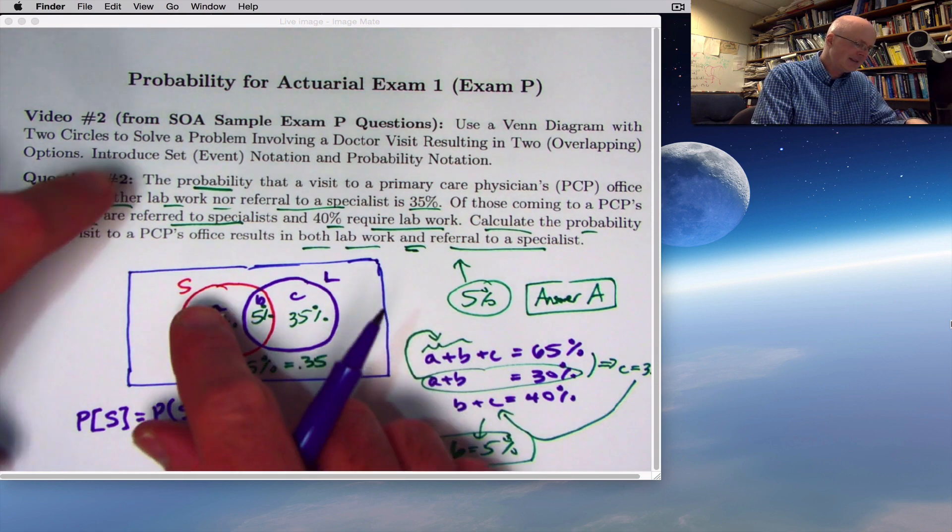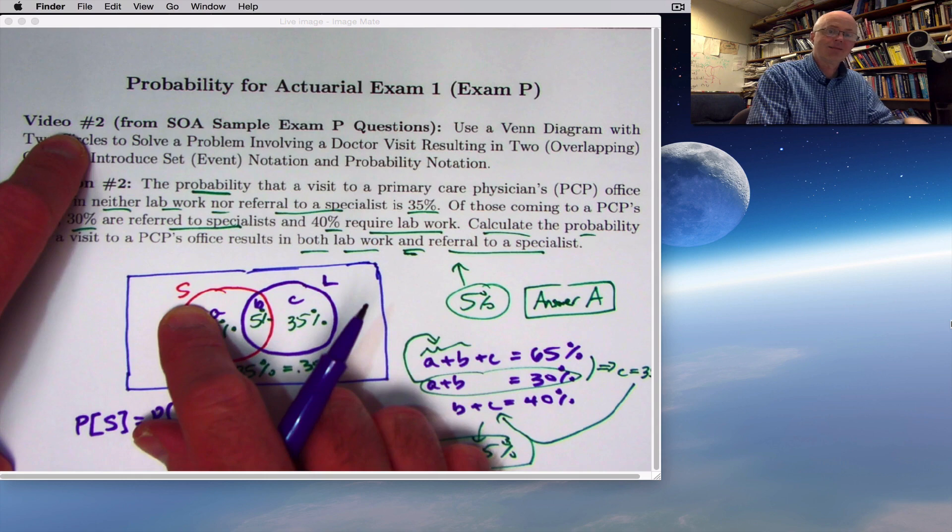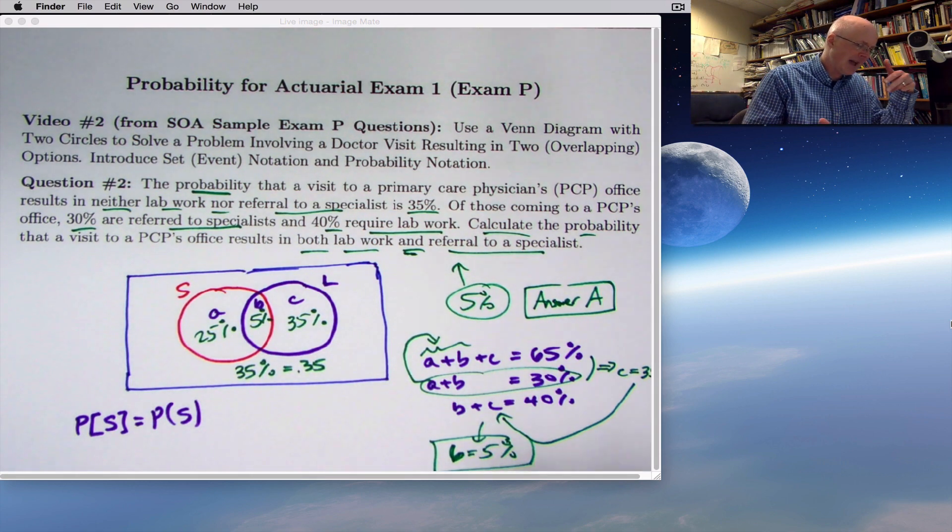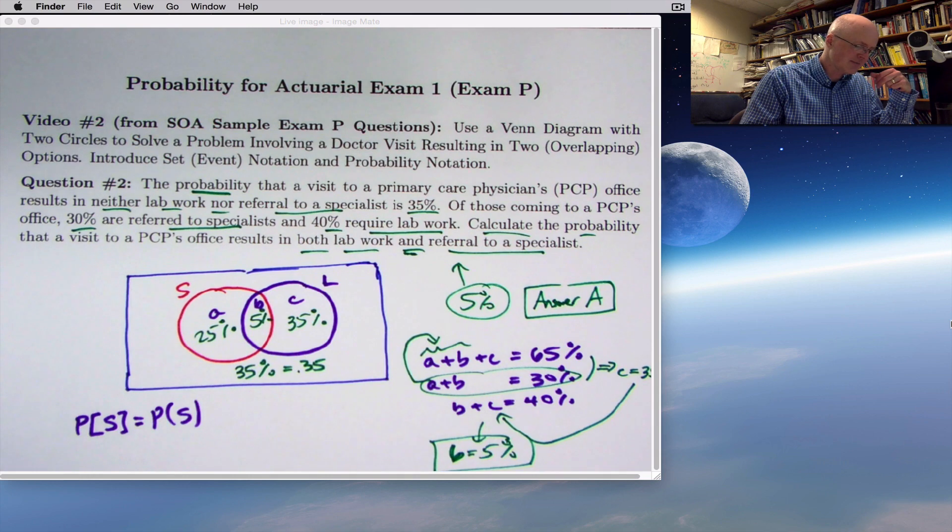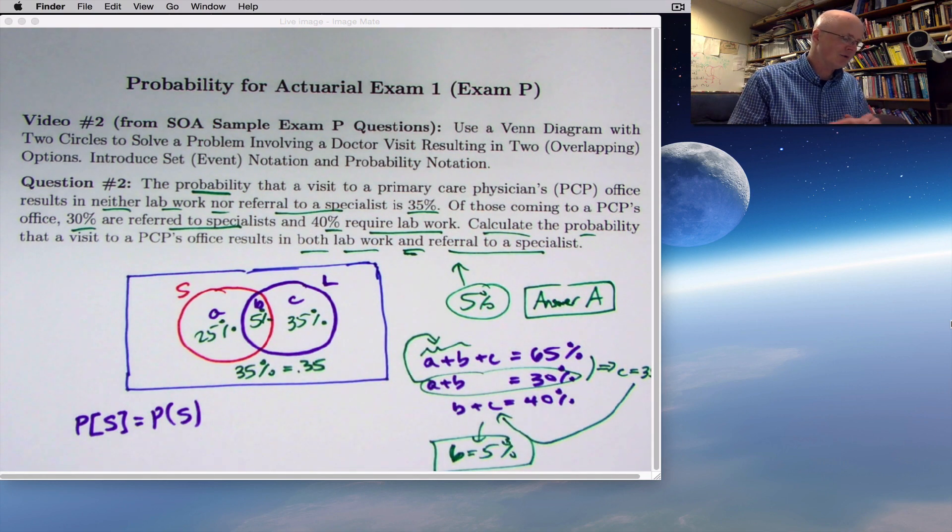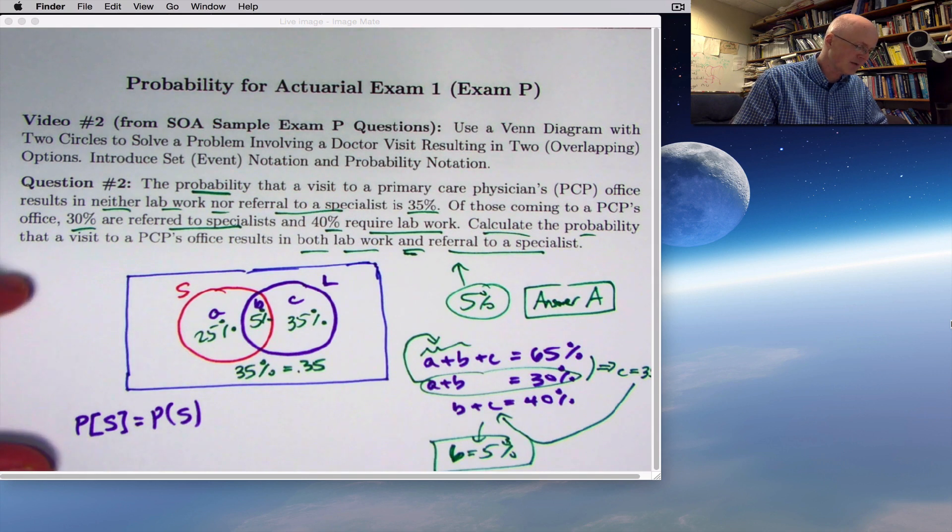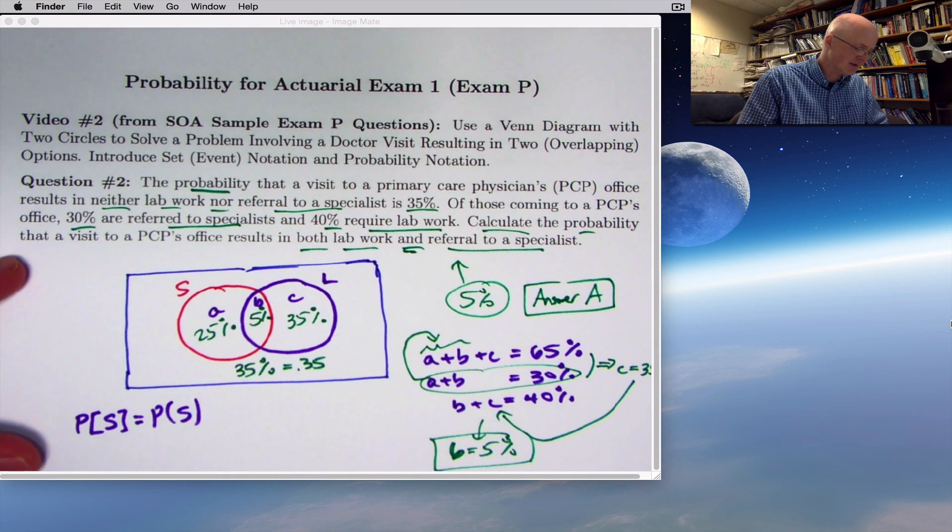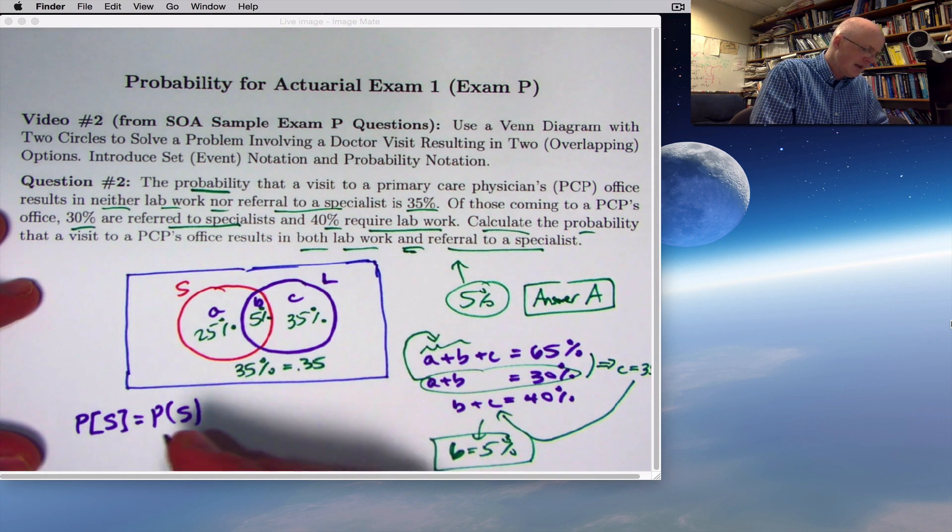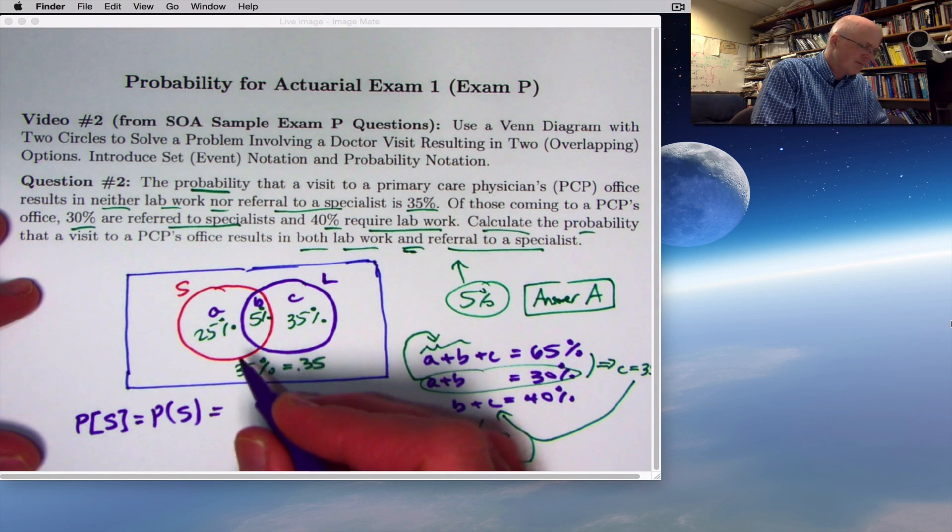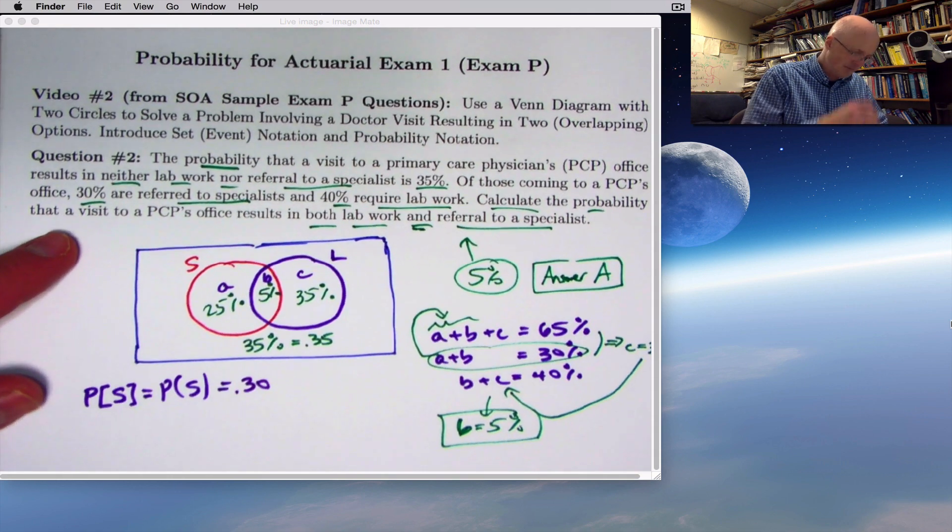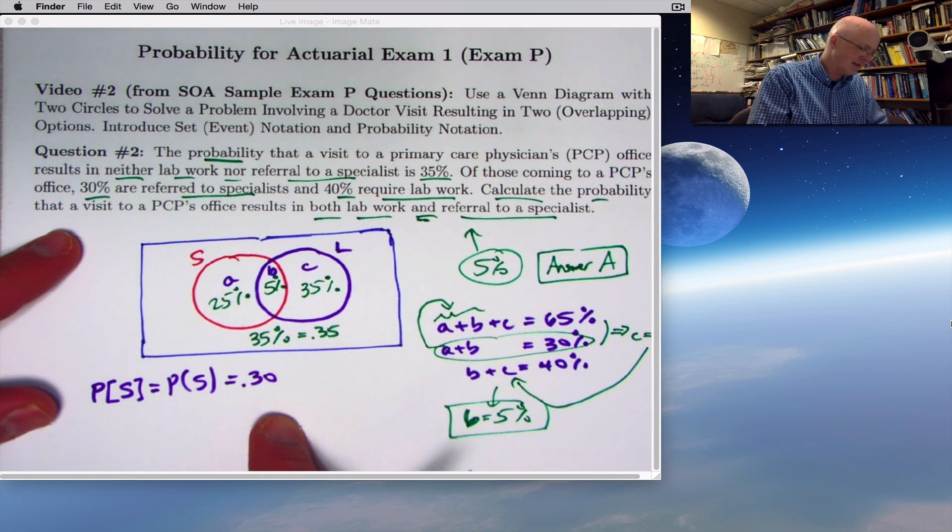Somebody would be in the subset S of all people if they had a referral to a specialist. They'd be in the subset L of all people that went to this primary care physician's office if they had lab work done in the past. Those could be thought of as sets. This would equal 30%. This is an example of information given to you.